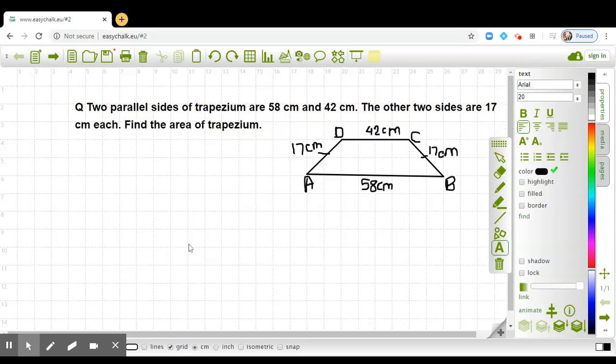Dear students, let us discuss this question. Two parallel sides of a trapezium are 58 cm and 42 cm, and the other two sides which are non-parallel are 17 cm each. We have to find the area of the trapezium. So first, what we will be doing is drawing or dropping perpendiculars from D on AB and from C on AB.